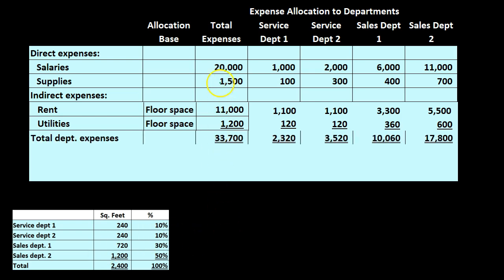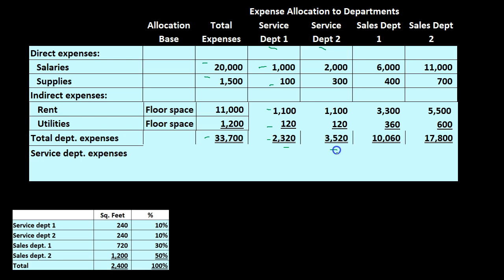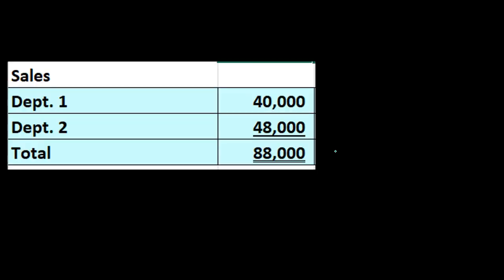Then we have the total department expenses, adding both the direct and indirect: 20,000 plus 1,500 plus 11,000 plus 1,200 for total expenses. Service department one totals 2,320. We've completed the two service departments, allocating all direct and indirect expenses to them. Since there is no revenue related to service departments, our ultimate goal is the sales or operating departments that do generate revenue. Therefore we need to allocate the service department costs out to the sales departments.